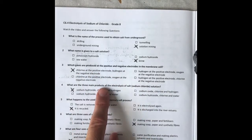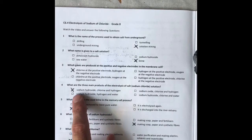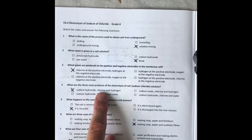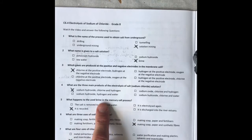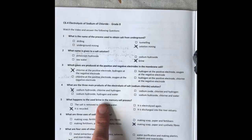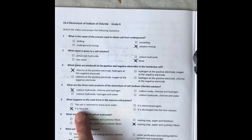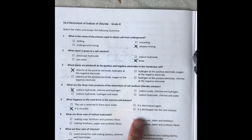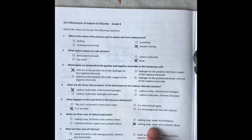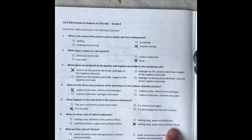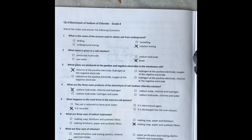What are the three main products of sodium chloride? Sodium hydroxide, chlorine, and hydrogen. What happens to the used brine in the mercury cell process? It's recycled and will be electrolyzed again. What are the three uses of sodium hydroxide? It's used for making soap, paper, and synthetic fibers. The four uses of chlorine are water purification, making plastics, insecticides, and bleach.